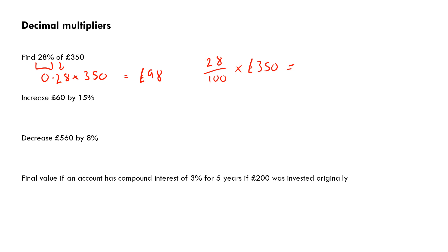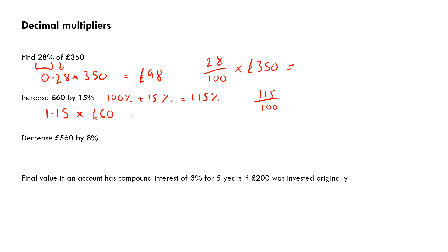A slightly more nuanced question: increase £60 by 15%. This time the decimal multiplier must represent the original 100% plus the extra 15%, giving 115%, so the multiplier is 1.15. Typing 1.15 × 60 into the calculator gives £69. That's done in one step, so it's quite a quick method.